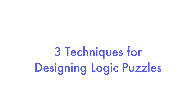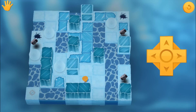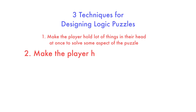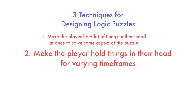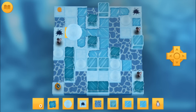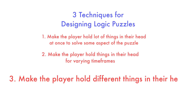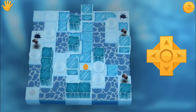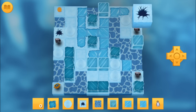So there are three techniques that you can add to your game design tool belts to use when making logic puzzles. One: make the player hold a lot of things in their heads at once to solve some aspect of the puzzle, like the combination of pushable objects. Two: make the player hold things in their head for varying time frames — some challenges should be immediate, like the combination of pushable objects, and some should be spread out across the duration of the puzzle, like with the snowball. Vary the time frame of your logical challenges. Three: make the player hold different things in their head at once. Players want to put things in a linear order, so interleave the aspects of your puzzle to challenge your player's mind to think about multiple things across different time frames — some immediate like pushable objects, some spaced out like the snowball, and some in between, like with the portals.